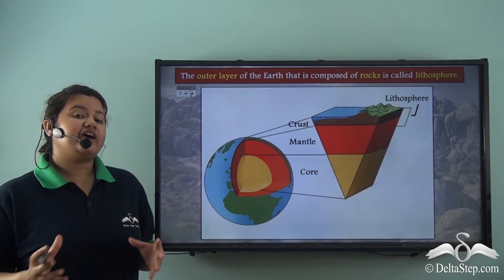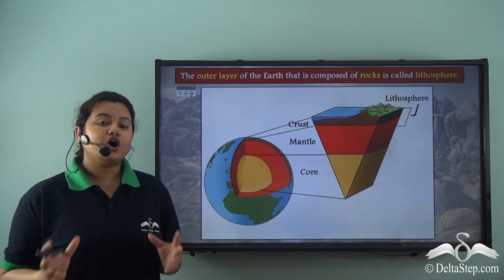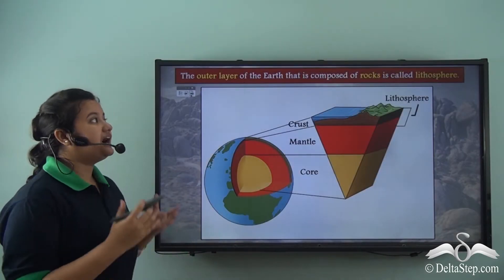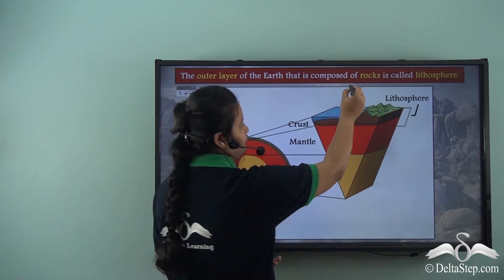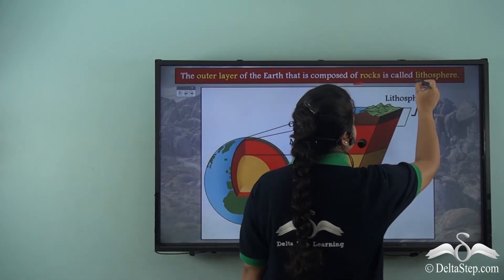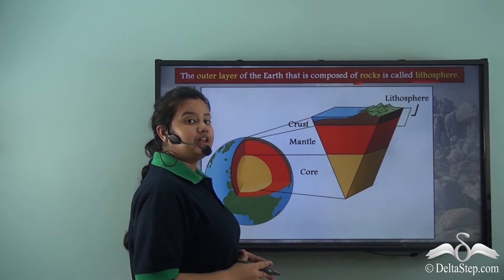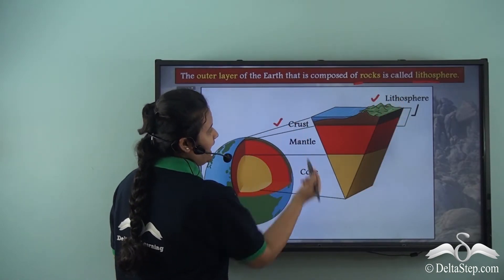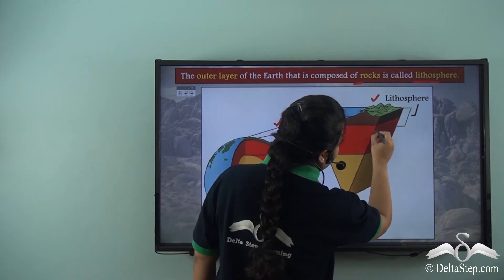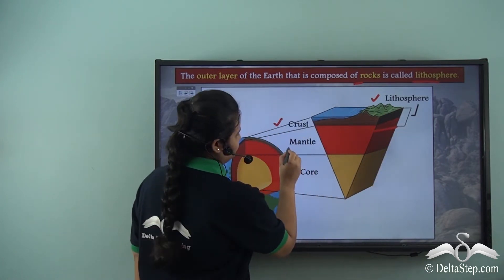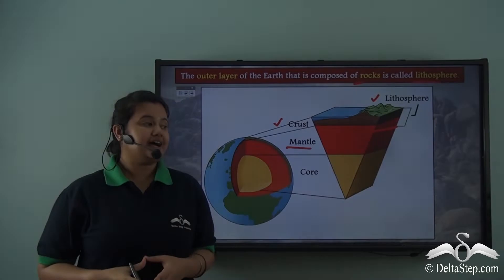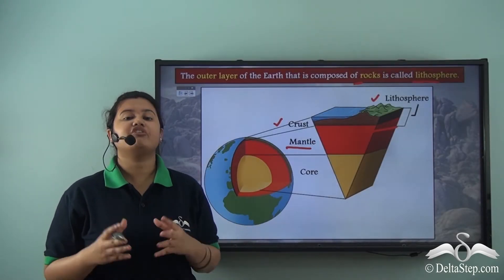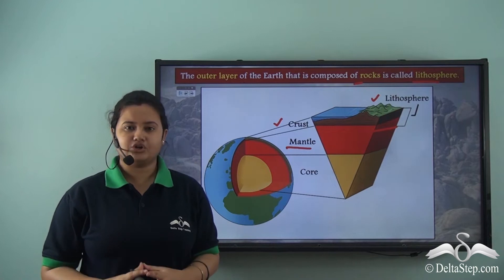So where are rocks present? Rocks are present on the outer layer of the earth. In fact, the outer layer of the earth that is composed of rocks is called the lithosphere. The lithosphere is a part of both the crust and the uppermost part of the mantle.